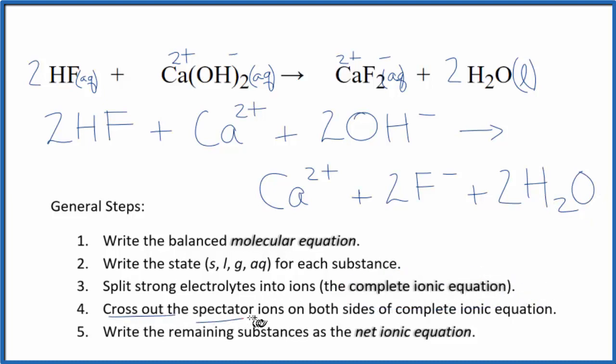Now we can cross out spectator ions. They're on both sides of the complete ionic equation and don't change. The only thing that's the same in the reactants and products is the calcium ion. Let's cross that out.